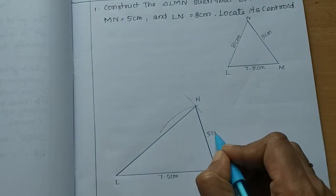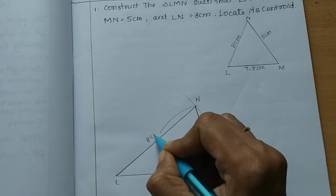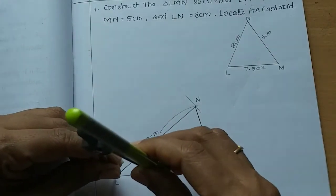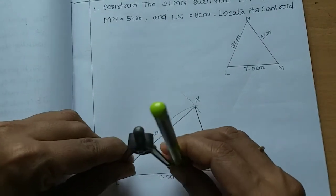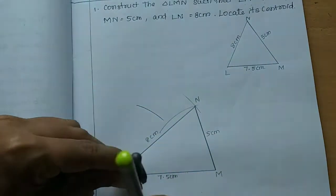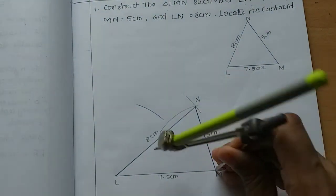This is 5cm and this is 8cm. Now, we need to make a centroid. Now, we need to make a median. We need to make a midpoint. Then, drop more than half. Then, put the scale on the point.